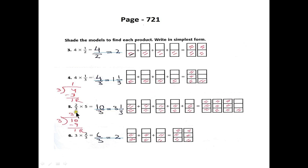In question number 5, we have 2/3 × 5. When we multiply, we get 10/3. Since the numerator is larger, we do division: 10 divided by 3 gives us 3 whole numbers with 1/3 remaining.